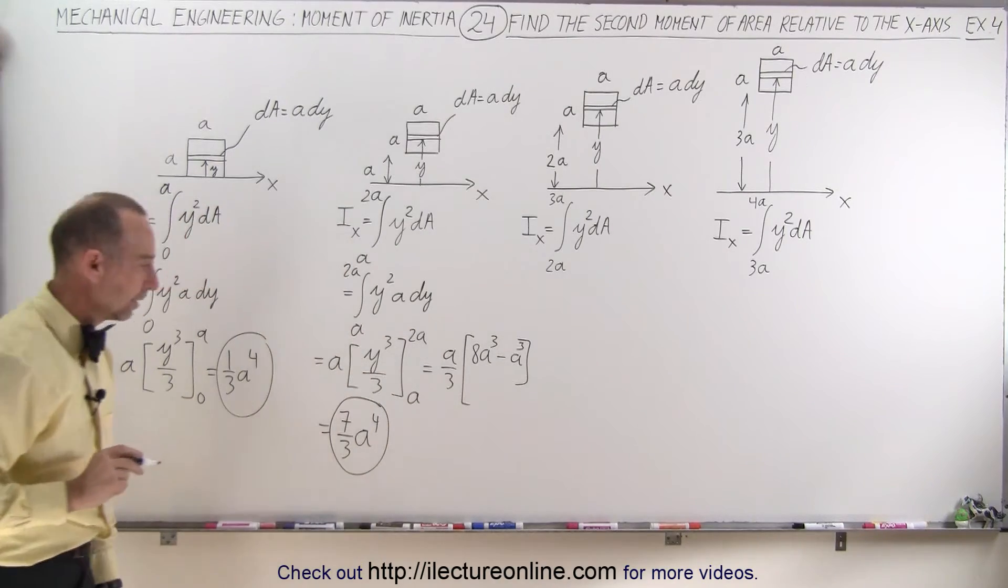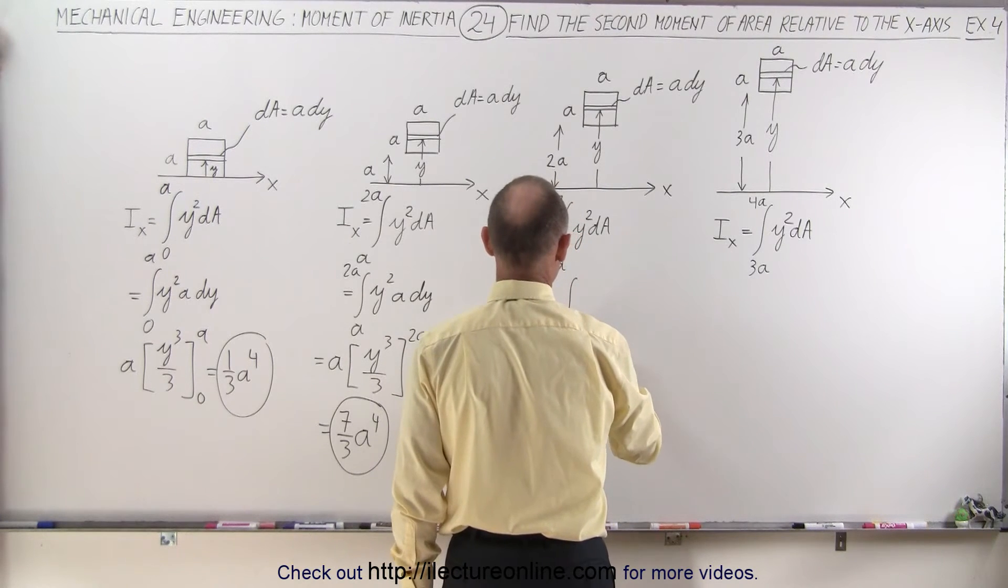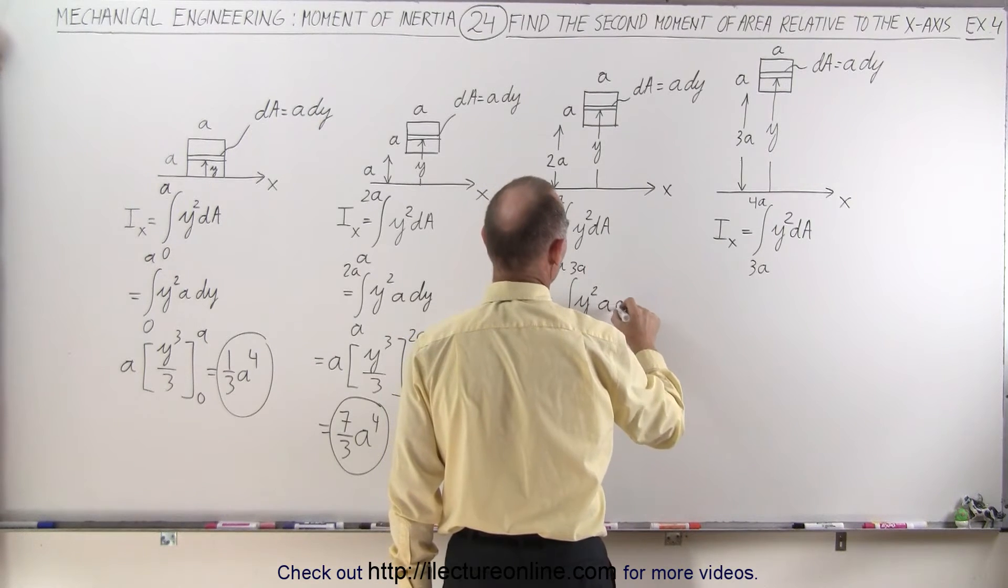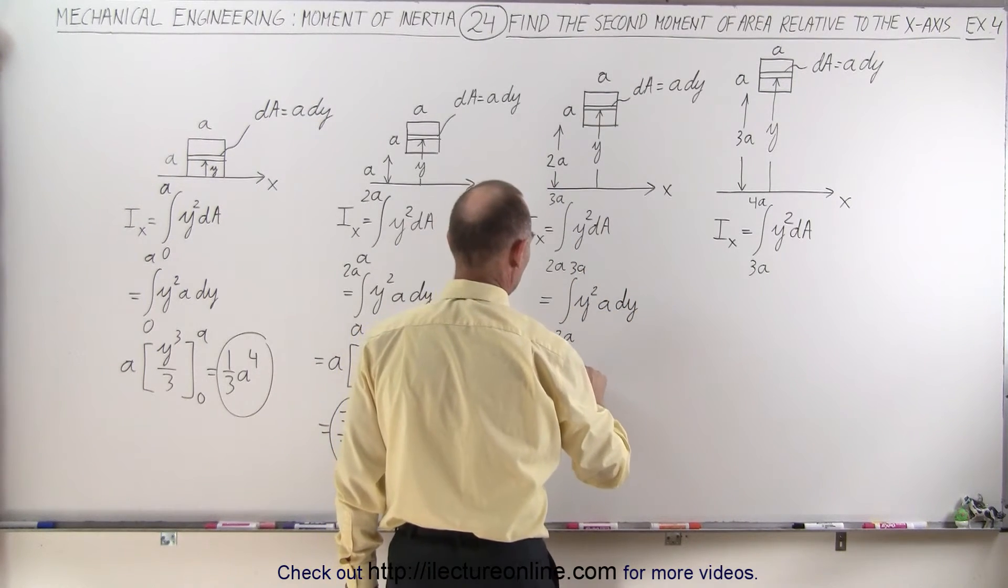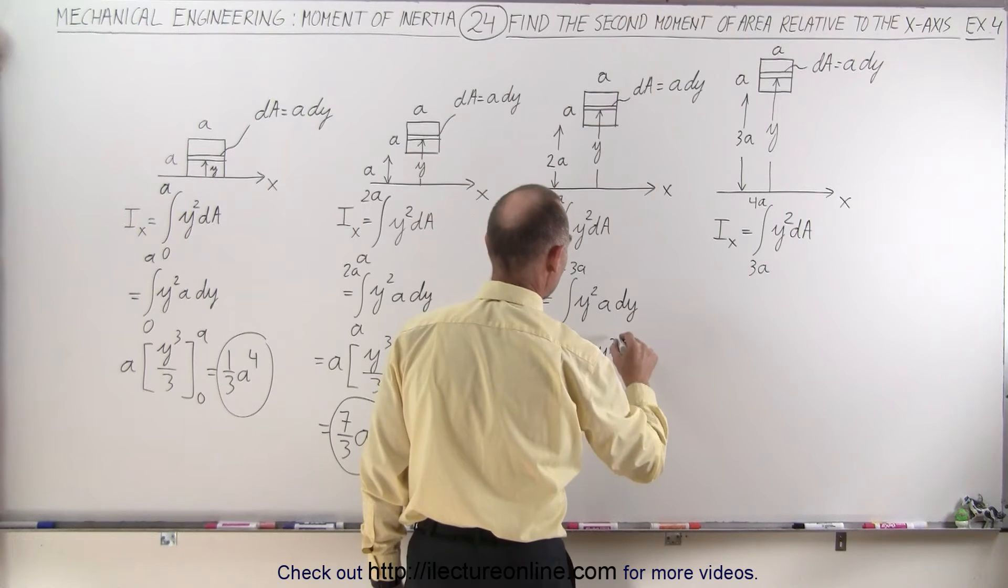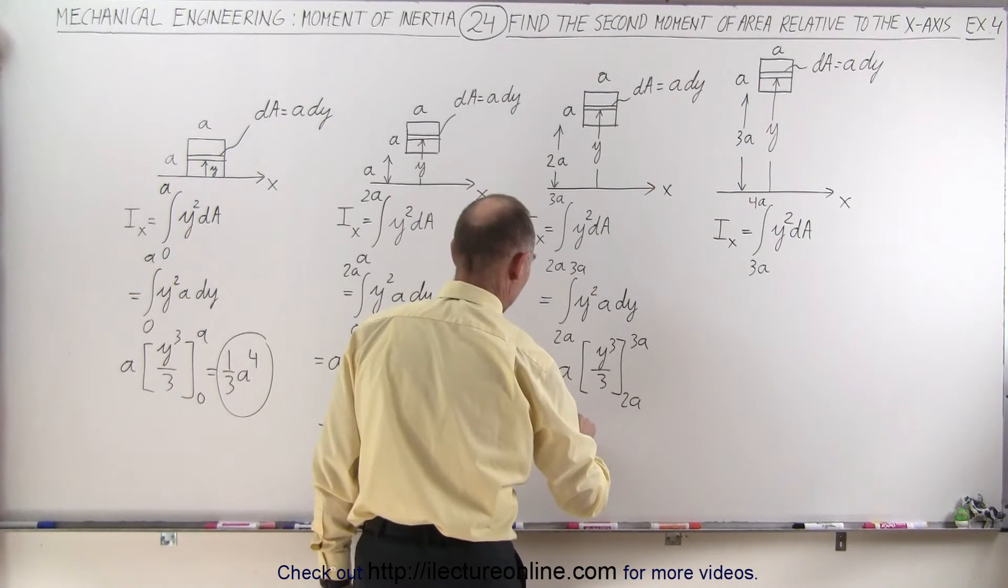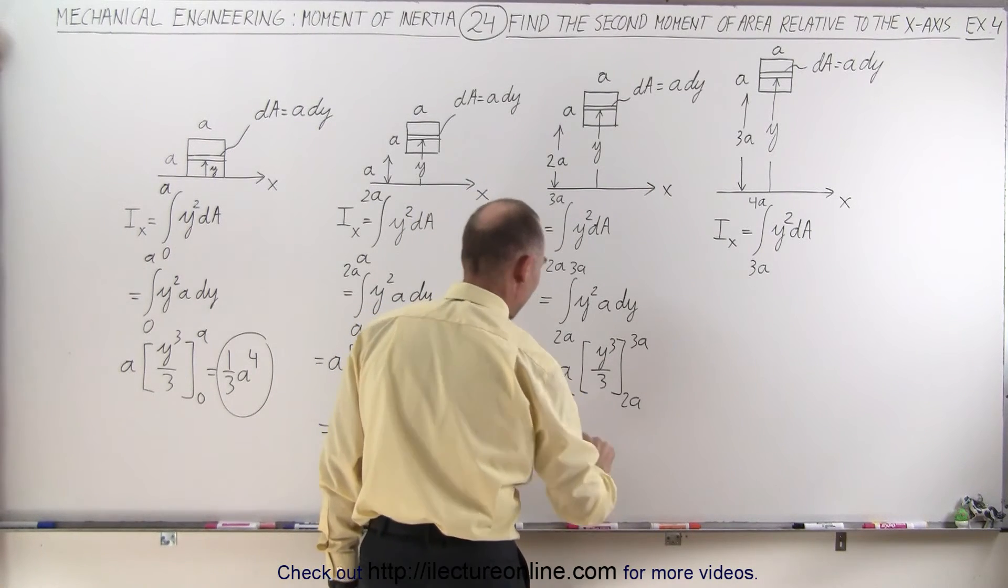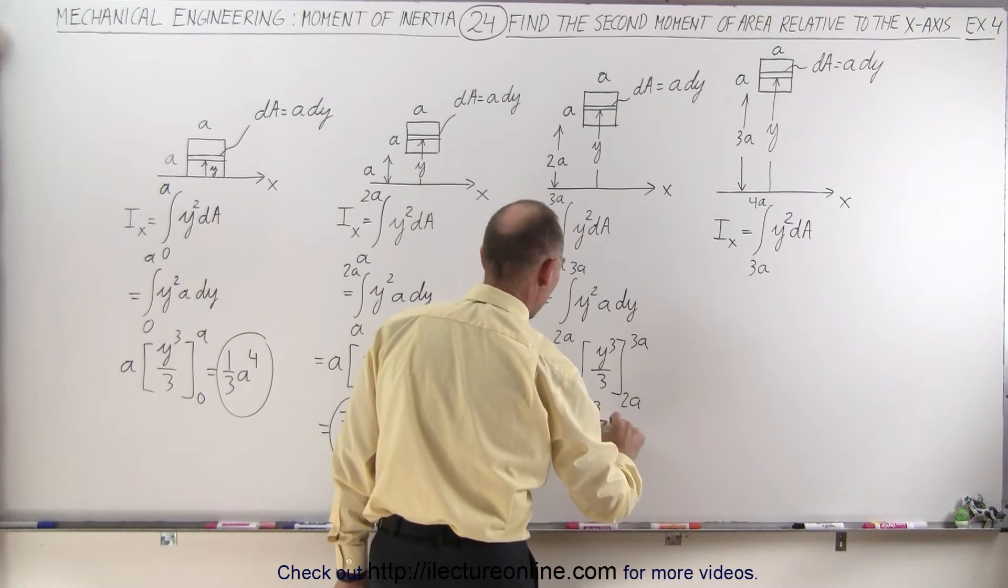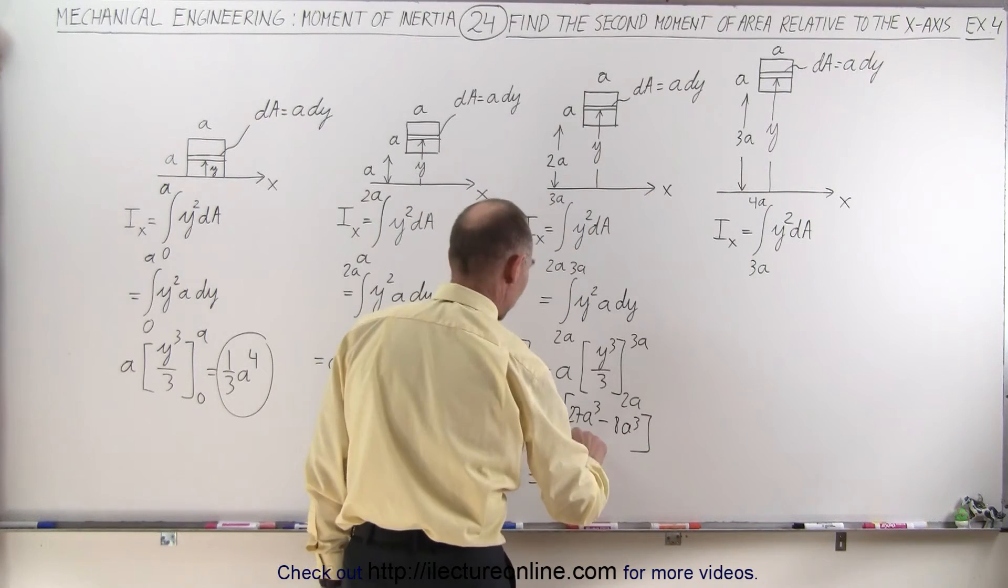Now on to the third integral. This is equal to the integral from 2a to 3a of y squared a dy, which becomes equal to a times y cubed over 3, evaluated from 2a to 3a. I can pull the 1 third out, so this becomes equal to 27 minus 8, or 19 over 3a to the fourth power.